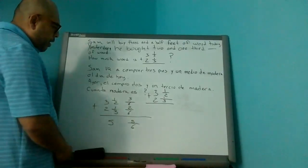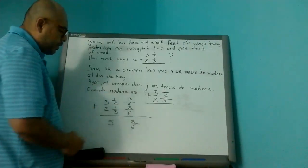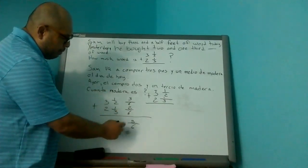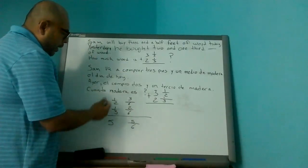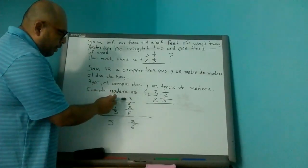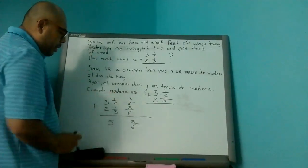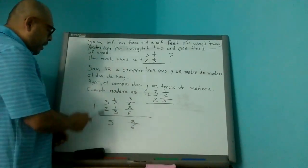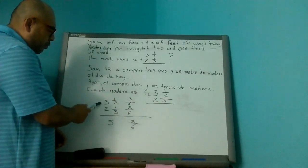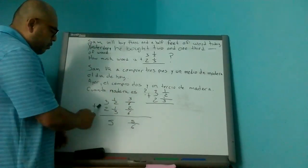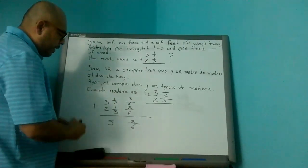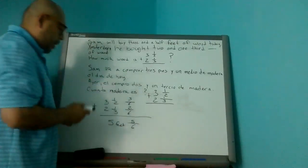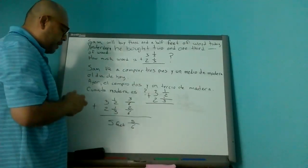So therefore, we got three over six and two over six. So we bring down the common denominator as six. And we add three and two is five. So therefore, five over six is our result. Then we add the feet of three and two, which is five. Three plus two is five. So therefore, it's five feet and five over six left.